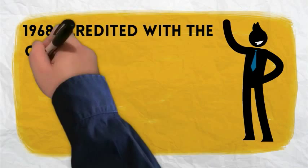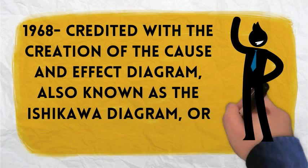In 1968, he was credited with the creation of the Cause and Effect Diagram, also known as the Ishikawa Direct Diagram or the Fishbone Diagram.